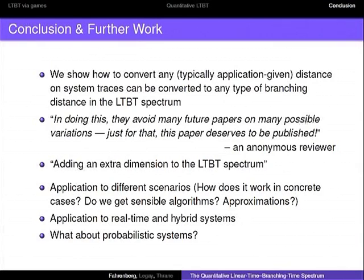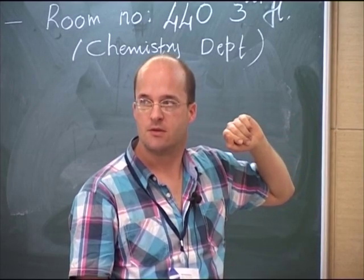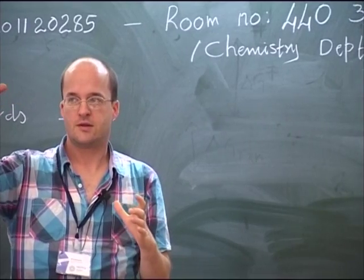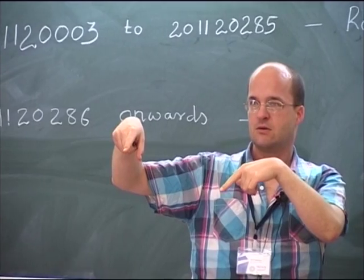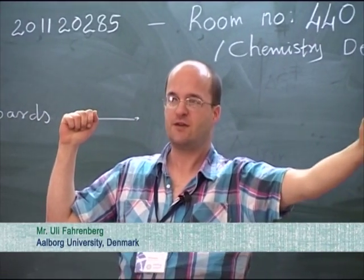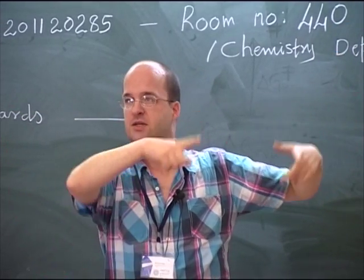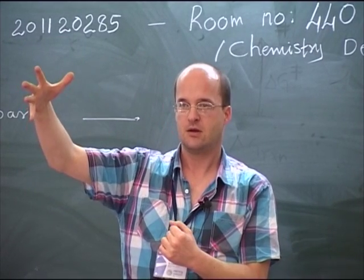Let me conclude. What we did in the paper is show how to convert any distance on system traces or executions to any type of branching distance in the LTBT spectrum. One reviewer wrote: 'In doing this they avoid many future papers on many possible variations — just for that this paper deserves to be.' Another way to think about it: we are adding an extra dimension to the linear time branching time spectrum, because the standard equivalences and pre-orders can be viewed as discrete distances — either zero or infinity — and we are filling in the space in between with quantities.